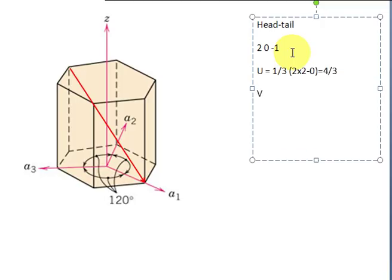Now, V is equal to 1/3(2 times V', which is 0, minus of U', which is 2). And this will give you minus 2/3.